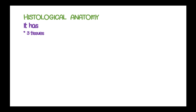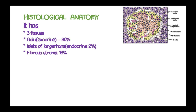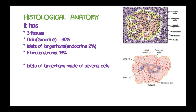Histologically, the pancreas has three types of tissues. The acinar or exocrine tissue occupies 80%. The islets of Langerhans, or the endocrine tissue, occupies 2% of the entire pancreas. The alpha cells of the islets of Langerhans secrete glucagon and they occupy 20% to 25% of the pancreatic islets.